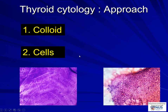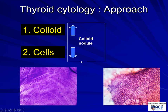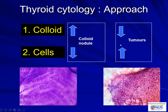Now let's look at the main elements of thyroid cytology. There are always two things we really want to focus on: colloid and cells. A rule of thumb is that if you see abundant colloid, especially thin colloid and not so many cells, you are more in the territory of a benign nodule. Whereas if you see less colloid and more cells, these are more often associated with tumors. Of course, these are not hard and fast rules — you can have very abundant cellularity in hyperplastic benign nodules as well.